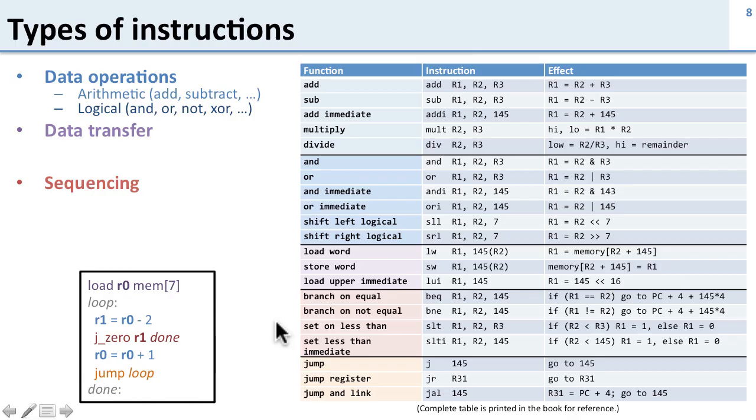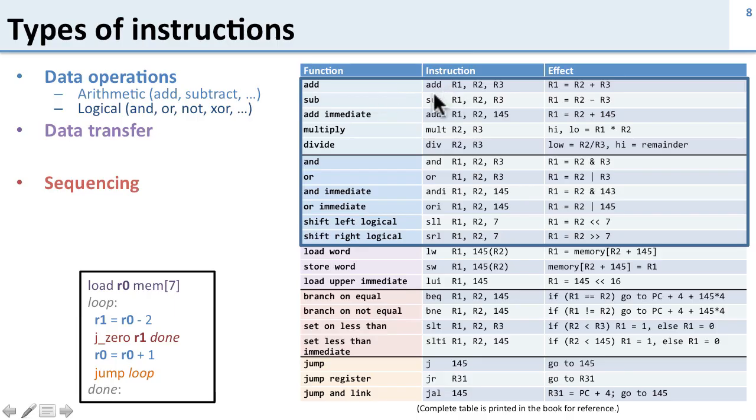So for the data operations these are arithmetic so additions subtraction and logical. And here you can see them. So here's the add instruction that we saw before. Add r1 r2 r3. What does it do? Well r1 equals r2 plus r3. Here's add immediate. We also have logical instruction so here's and. So and looks just like add except instead of returning the results of adding r2 and r3 it does a logical and of the two of them.